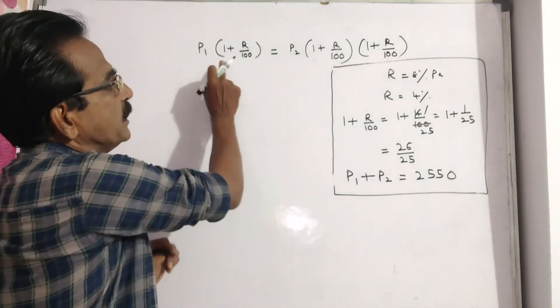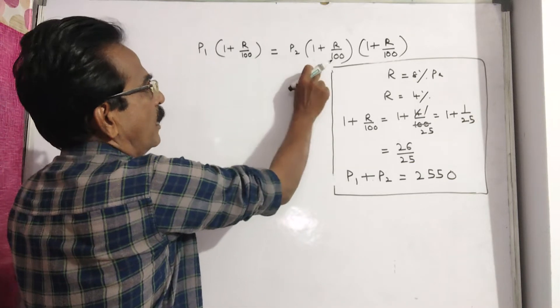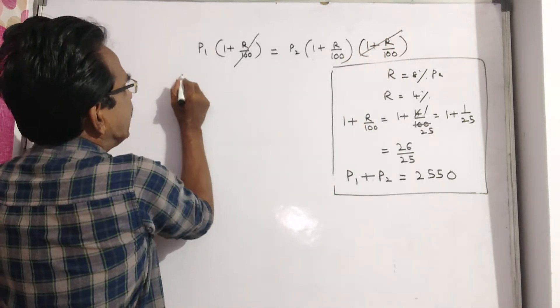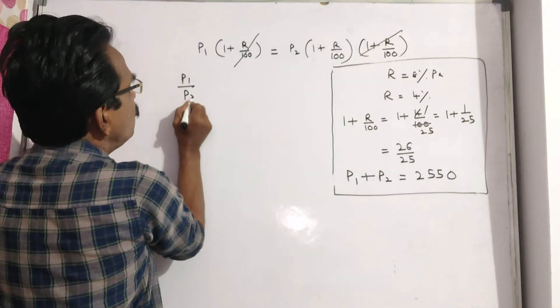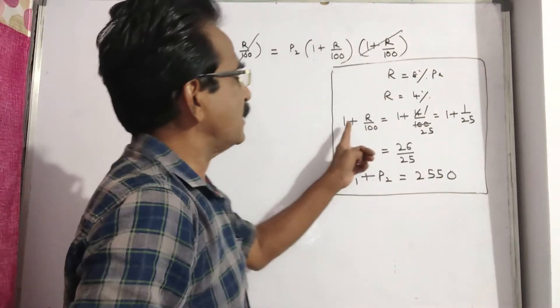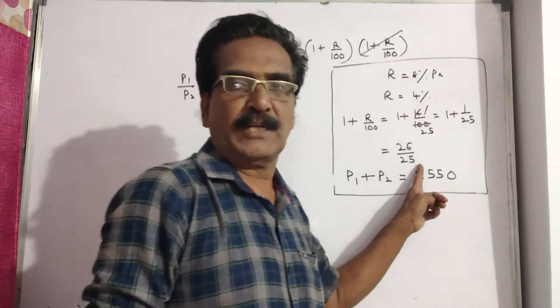Friends, these two are equal installments. So let us cancel this one. Now we get P1 by P2. P1 by P2 is equal to 1 plus R by 100, which equals 26 by 25.